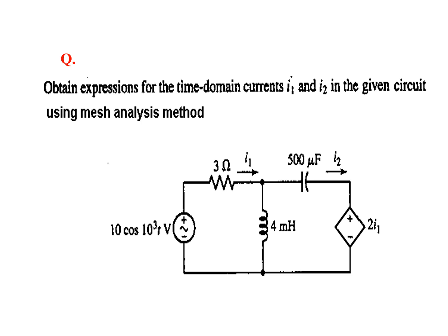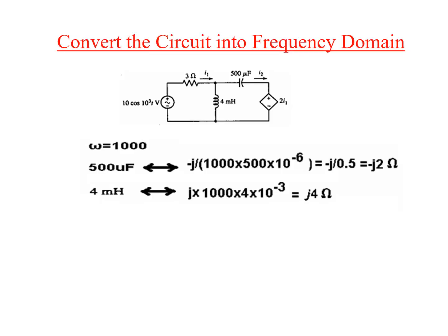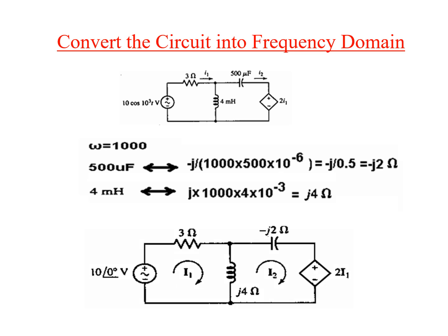From the given voltage signal, omega is 10 to the power 3, that is omega equals 1000. We convert the capacitors into phasor form, which comes to be minus j2, since it is j divided by omega C. Similarly for the milli Henry inductor, j*omega*L comes to be j4. This is now the phasor equivalent circuit.